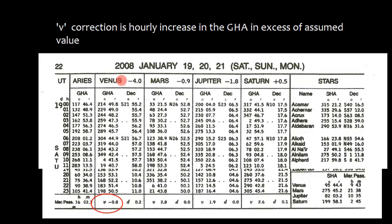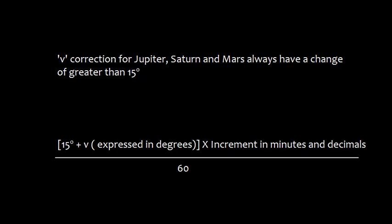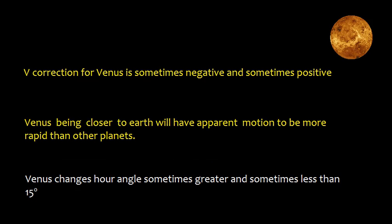Here in Almanac there are four planets: Venus, Mars, Jupiter and Saturn. Their V correction is given here. V minus 0.8 for Mars it is positive and Jupiter is also positive and Saturn is also positive. The Venus can have positive and negative and I will discuss this later on. The V correction for Jupiter, Saturn and Mars is always greater than 15 degrees. So we can find 15 degrees plus V if we express in degrees into increment in minutes and decimal divided by 60.